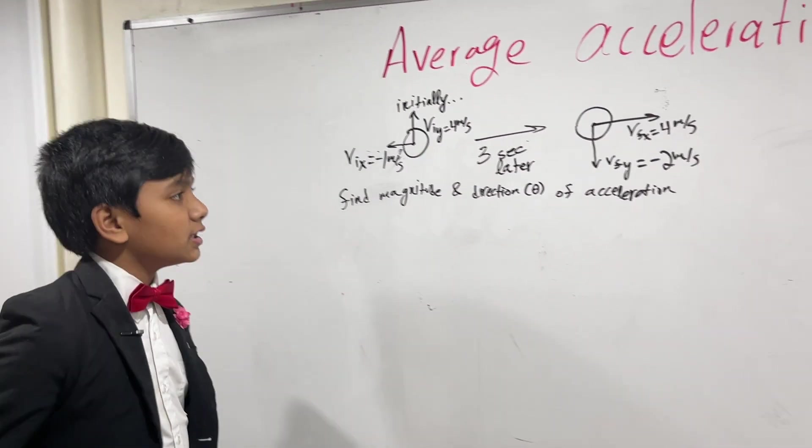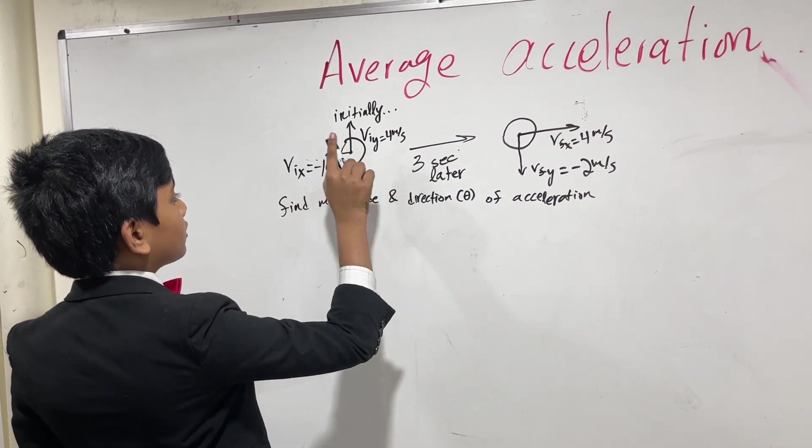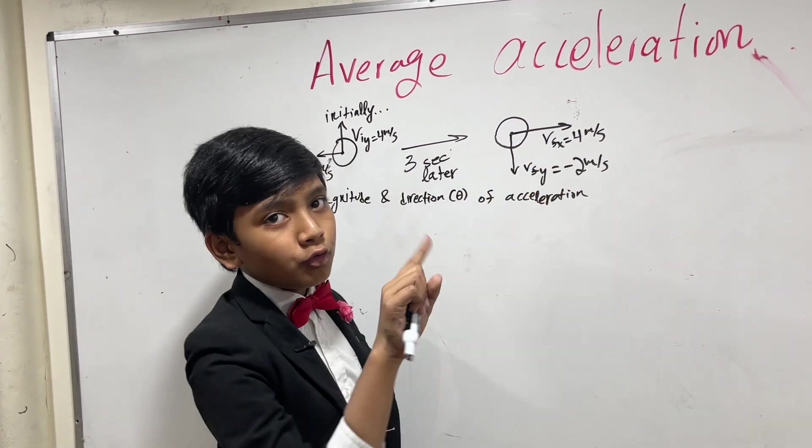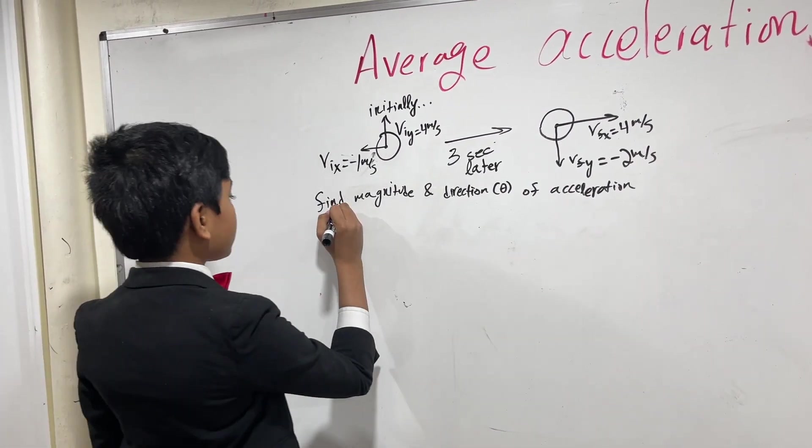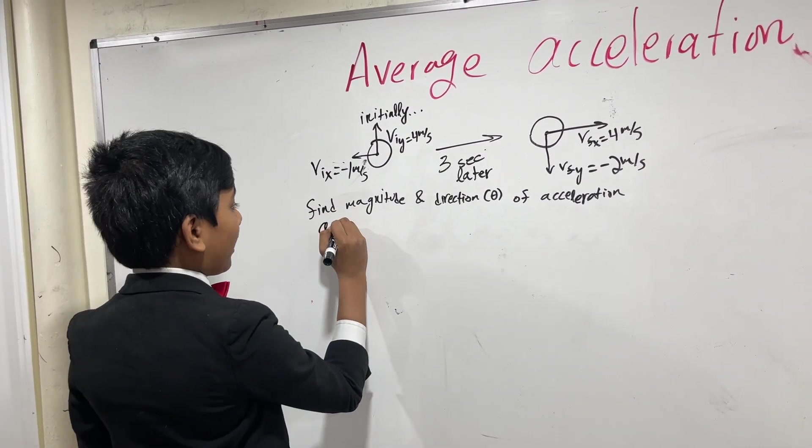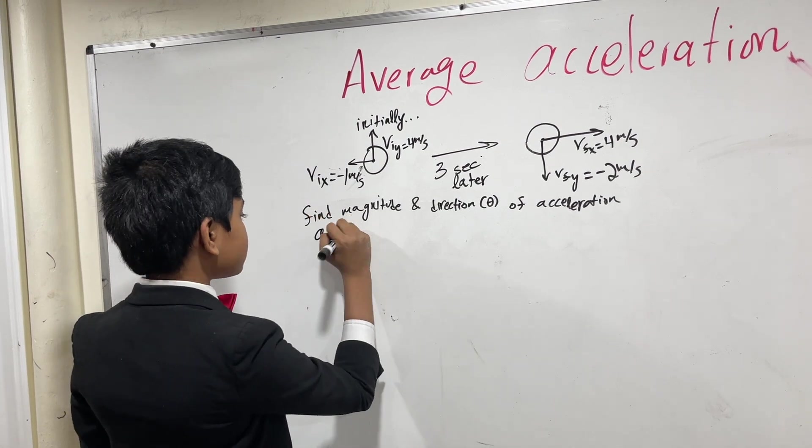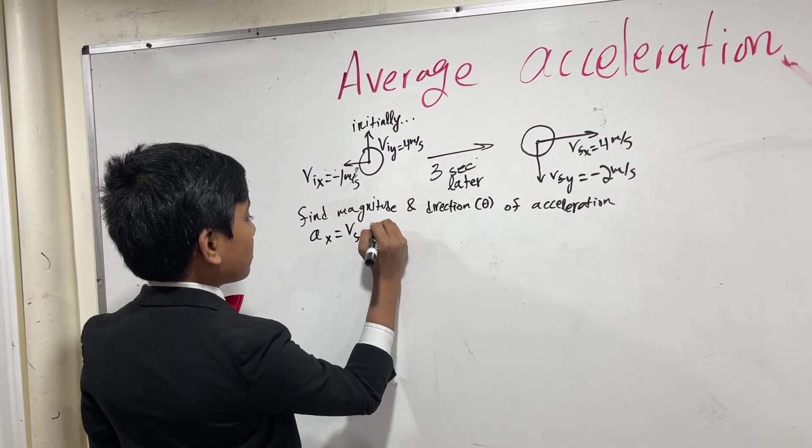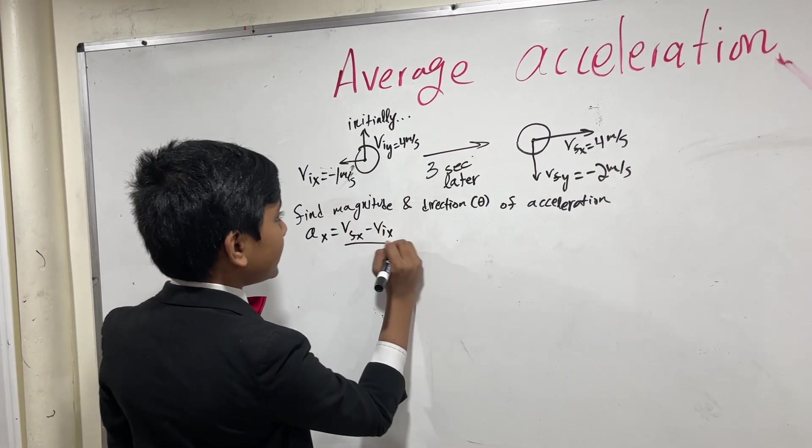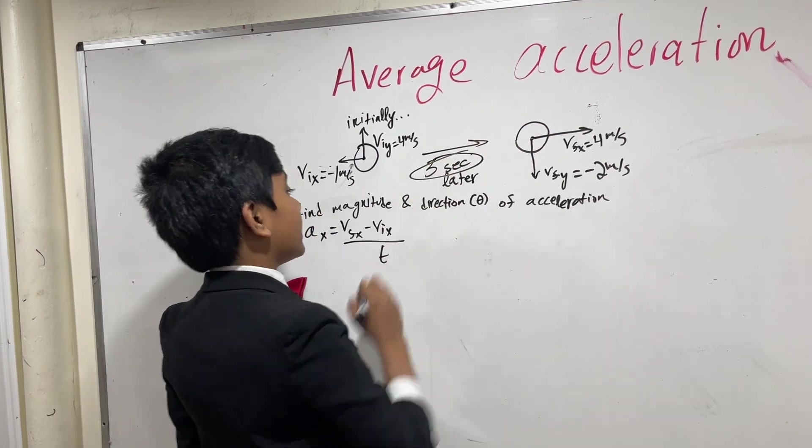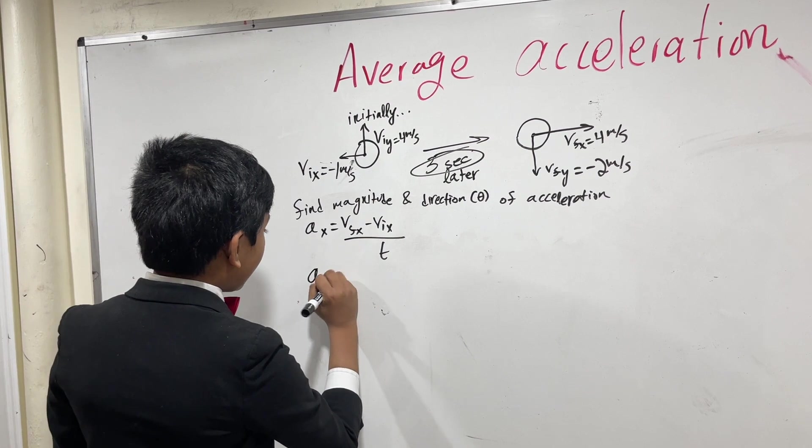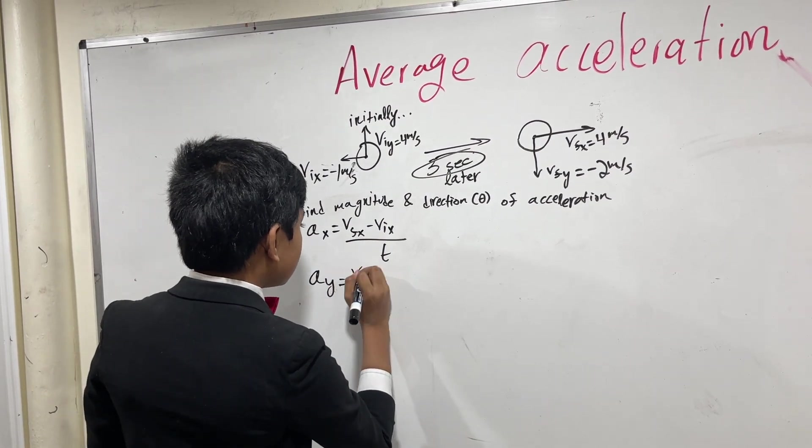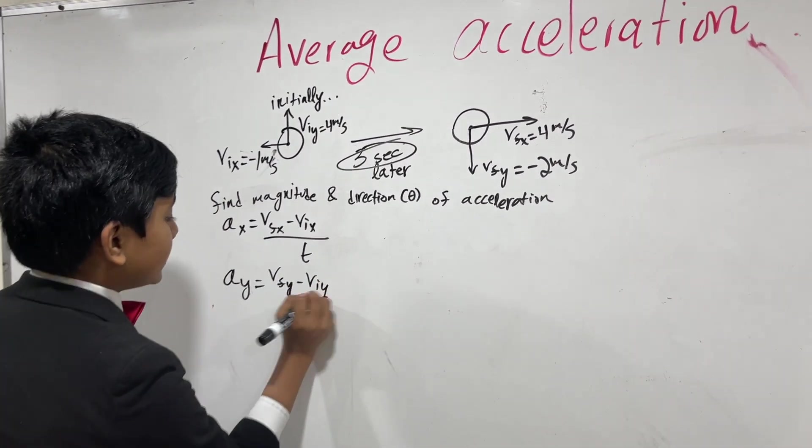You have a hunch to try and find the resultants over here, but no, that's not what we're doing. Instead, what we want to do is we want to find our acceleration in Vx, which is Vfx minus Vix over T. Come on, there's a reason why they gave us this 3 seconds.